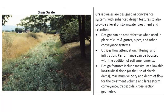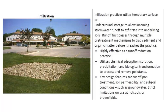A grass swale — swale being another word for ditch or canal — uses grass lining and amended soils (replacing clay with sands and gravels) instead of concrete to encourage infiltration as water moves through the channel. Similarly, a low point in a development can be made into an infiltration area with a gravel and amended-soil base to promote infiltration without being a formal detention pond.